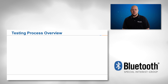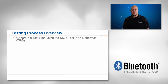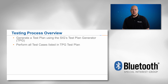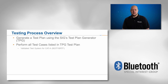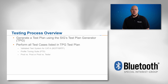The first step to have completed before the testing phase is to create a project and generate a test plan using the SIG's test plan generator, or TPG. You will execute the test cases from your test plan using various methods including validated tests, systems for Category A, the PTS, or a user-defined test setup. The end goal and requirement is to achieve a pass for all the required tests in your test plan.